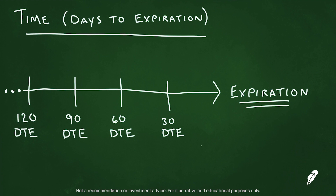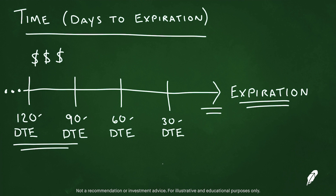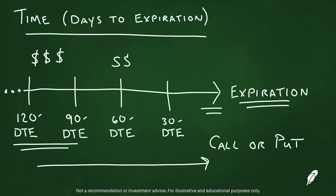Let's talk about time. Every option has an expiration, and therefore there are days until that option expires. The more days until expiration, potentially the more value on the option, all other factors remaining equal. Think of time like a clock always ticking towards expiration. Whether we have a call or a put option, time is always working against the value of that option. All other factors remaining equal, if time goes by, options will lose value — both calls and puts.